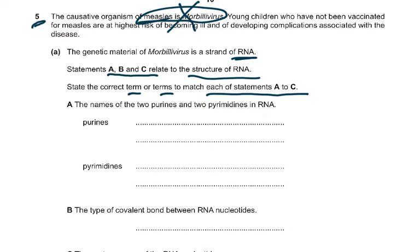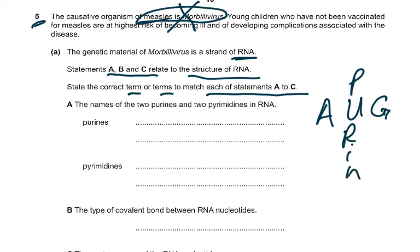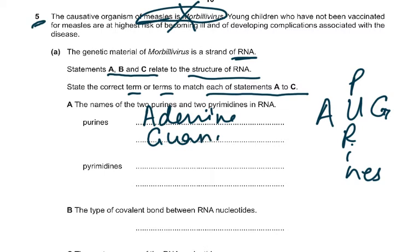So purines — the way I make you remember: purines are adenine and guanine. That's how I make you all remember it. Purines are adenine and guanine.